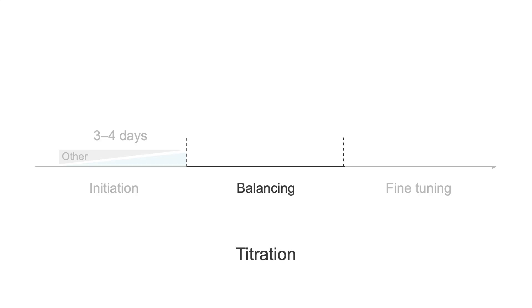After the patient is off the first group of medications, they transition to the second phase of titration, the balancing phase. In the balancing phase, levodopa is decreased while continuing to increase apomorphine. The goal is to decrease levodopa by 50%, and this typically takes six to seven days. There are two options for tapering levodopa: decrease the number of times the drug is taken or reduce the dose. Increase the apomorphine dose by 0.5 mg every four hours or by one to one and a half mg every day up to the dose needed to control fluctuations.